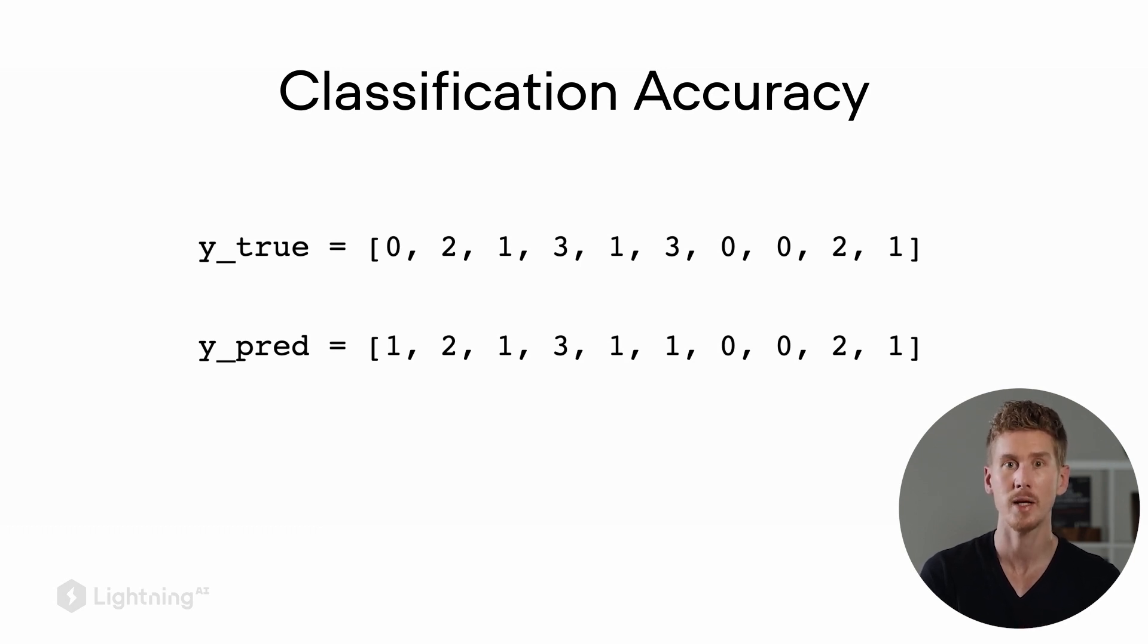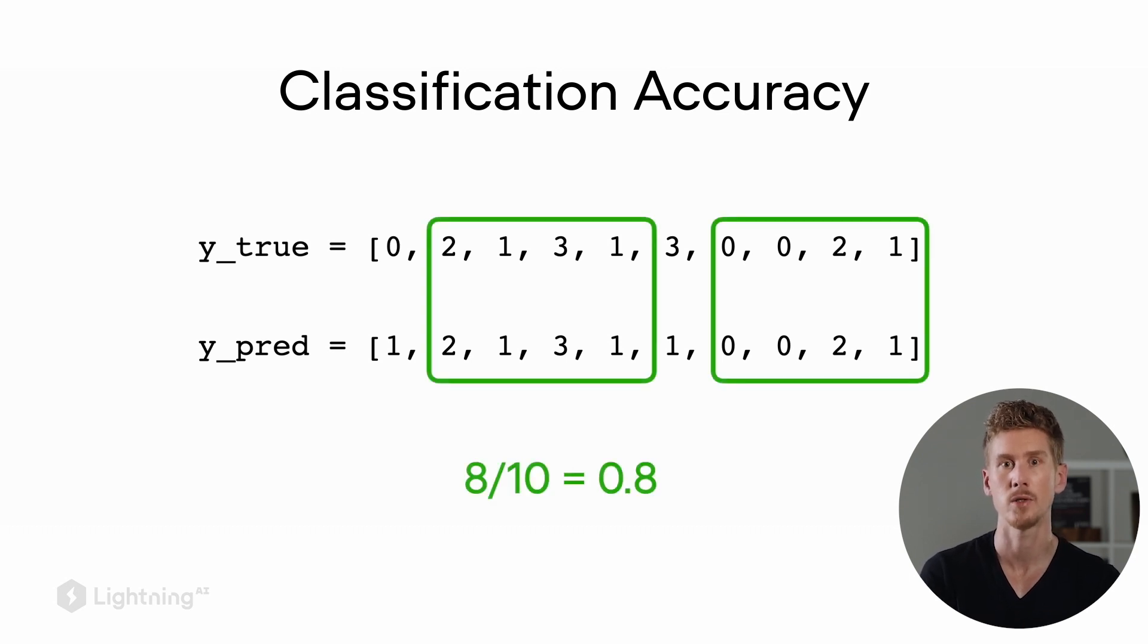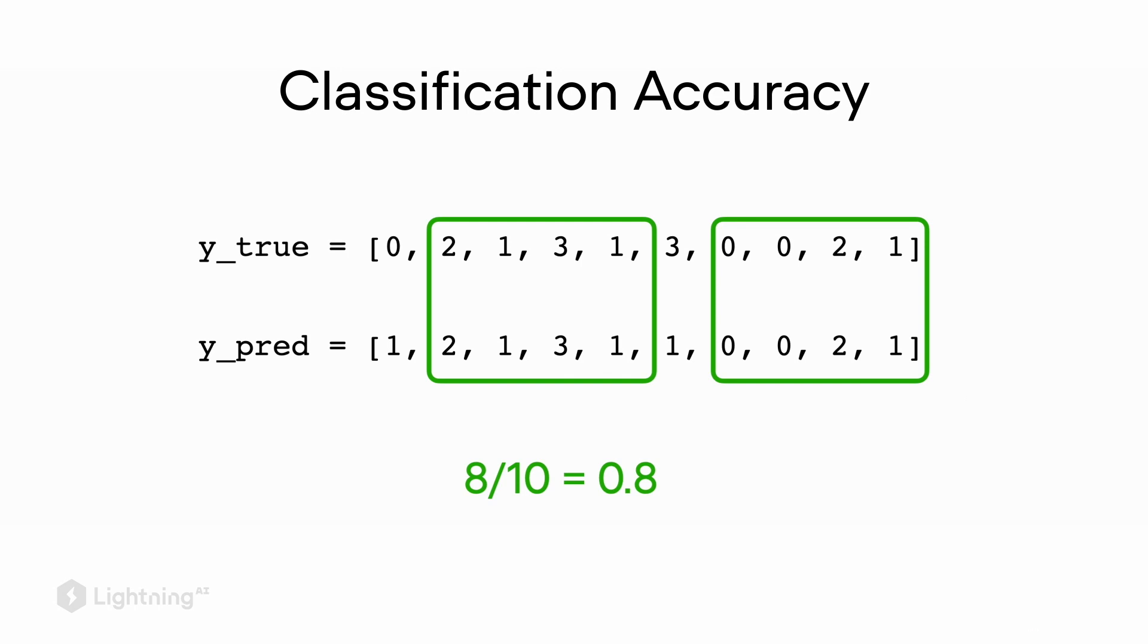At the top, we again have the true predictions, the correct labels. And at the bottom, we have the predicted labels by our model. And again, we can just use the accuracy to count how many times the model makes a correct prediction. So in this case, 8 out of 10 predictions are correct. So our classification accuracy is 0.8 or 80%.